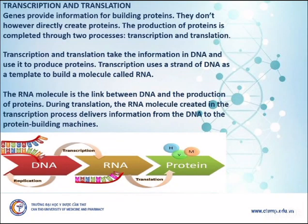Transcription and Translation. Genes provide information for building proteins, but they don't directly create proteins. The production of proteins is completed through two processes: transcription and translation. Transcription and translation take the information in DNA and use it to produce proteins.